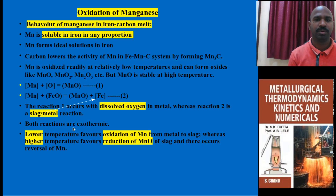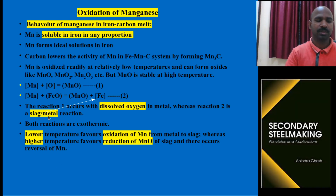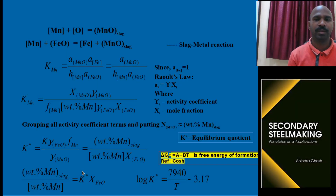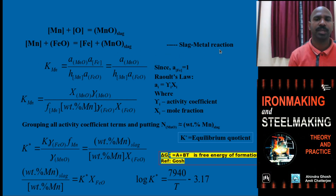Most of the cases, the manganese oxidation reaction is exothermic — heat is evolved and dissipated. At lower temperature, this reaction is favored; at higher temperature, there is reversal of manganese back into the steel. Applying thermodynamics — Raoult's law for these two equations — you realize this is a slag-metal reaction.